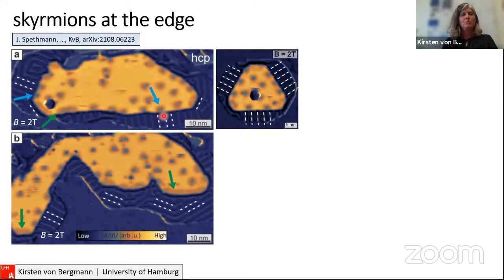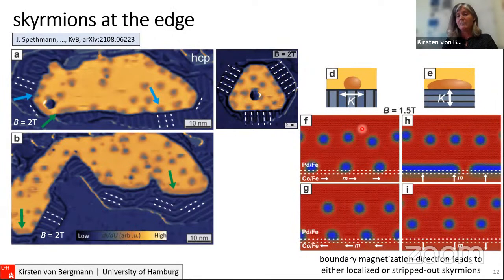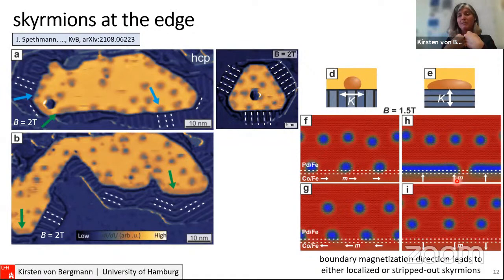When the cobalt-iron reconstruction is perpendicular, it promotes skyrmions sitting at the rim. When the reconstruction stripes are parallel, we get parallel stripes. This can be related to the magnetization direction within the cobalt — in one case it points one way, and in another it points differently. To test this, we performed simulations with different regions: the Pd/Fe layer, a transition regime, and cobalt magnetized in different directions. It matters greatly whether the cobalt magnetization points toward or away from the boundary, due to the DMI favoring a particular rotational sense at the edge.